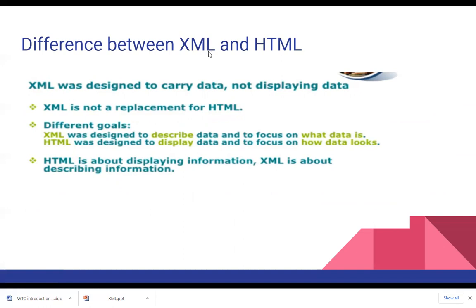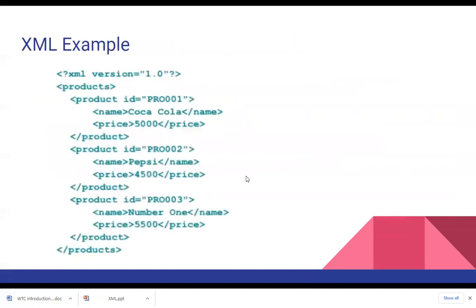The key difference between XML and HTML: XML is designed to describe the data and focuses on what the data is, while HTML is designed to display data and focuses on how data looks. If we want to present data in a nice format we use HTML; if we want to describe what the data is, we use XML.